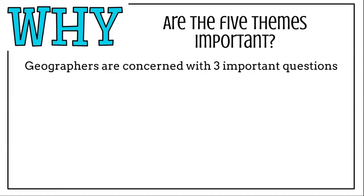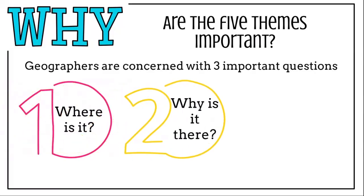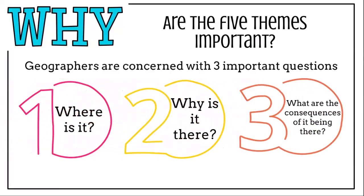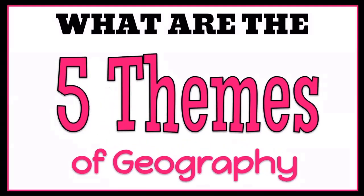Geographers are concerned with three key questions: one, where is it? Two, why is it there? And three, what are the consequences of it being there? These five themes help answer these three questions. So we're going to go over what the five themes of geography are, and hopefully by the end of this presentation you know how these five themes can apply to a variety of geographic questions.